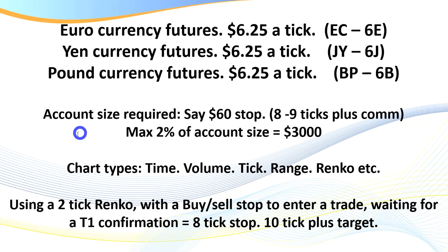What's really important is the size of your stop, which relates to account size. With an 8-to-9 tick stop plus commission — let's say $60 — at 2% risk you need $3,000. Don't buy into the story that brokers tell you that you only need $800 to $1,000 to trade. If your stop is $60 and you only have $800 in your account, that's 7% risk — you're going to blow your account.